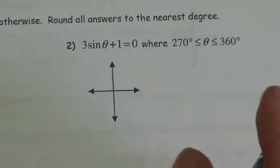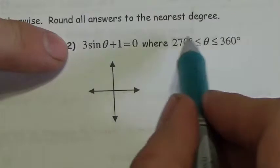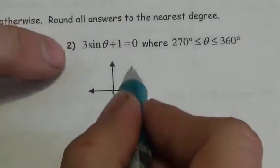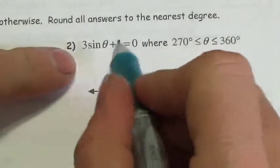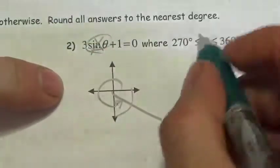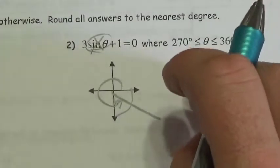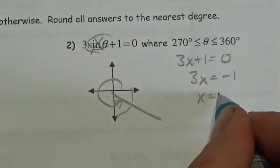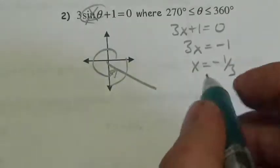Here's another slightly different question. The equation is 3 sine theta plus 1 equals 0, and we want the answer between 270 and 360 — which means we're looking for an answer in quadrant 4. What I don't know is the trig ratio, so I treat sine of theta as an unknown — like a big x. So 3x plus 1 equals 0. Solving that algebra first, I get sine of theta equals negative 1/3.